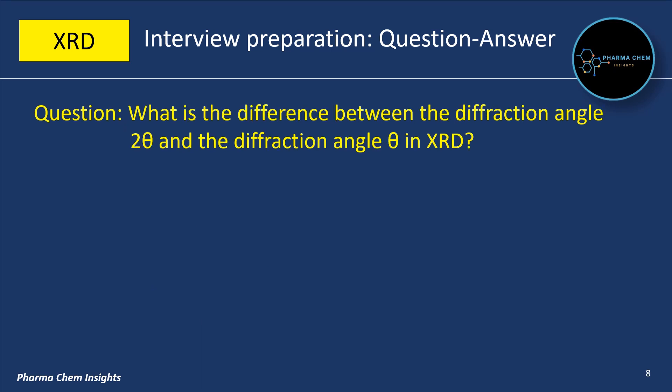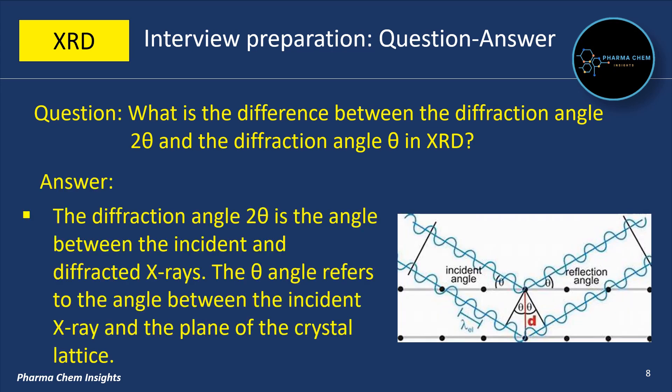Next question: what is the difference between the diffraction angle 2-theta and the diffraction angle theta in XRD? As shown in the figure, the diffraction angle 2-theta is the angle between the incident X-ray beam and the detector, while theta is the angle between the incident X-ray and the plane of the crystal lattice.